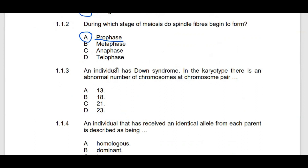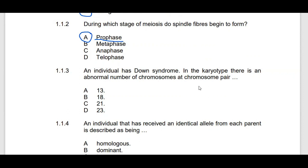They are saying that an individual who has Down syndrome — in the karyotype there is an abnormal number of chromosomes at a chromosome pair. Whenever you talk about Down syndrome, your mind must go to chromosome number 21. You must think about an extra chromosome on chromosome pair number 21. So the answer is going to be C.